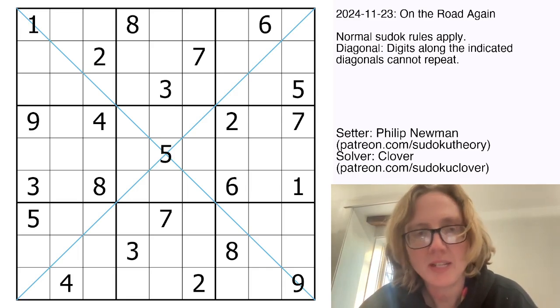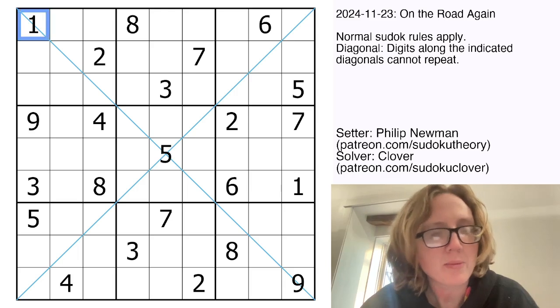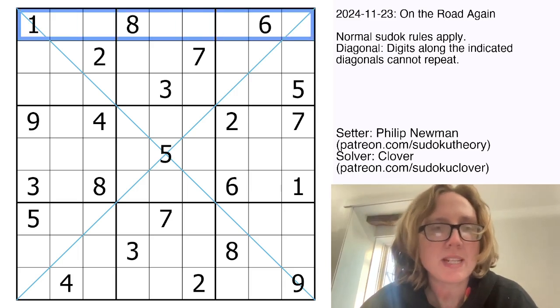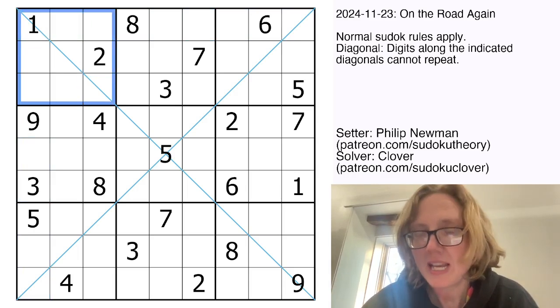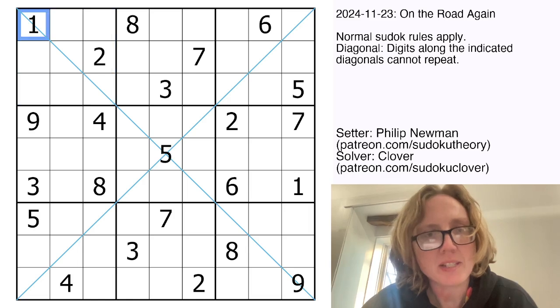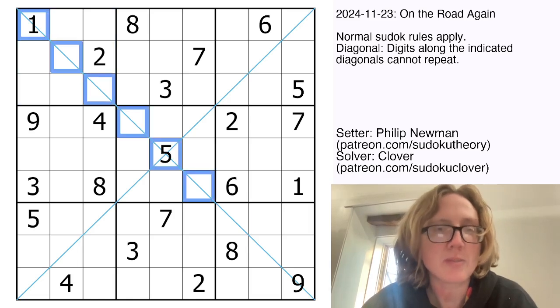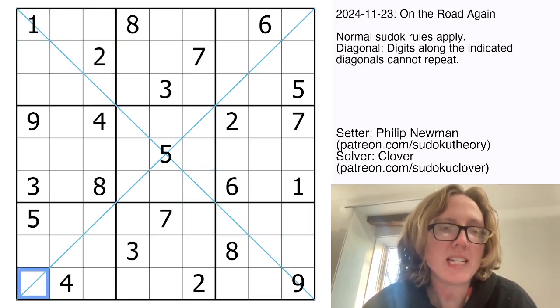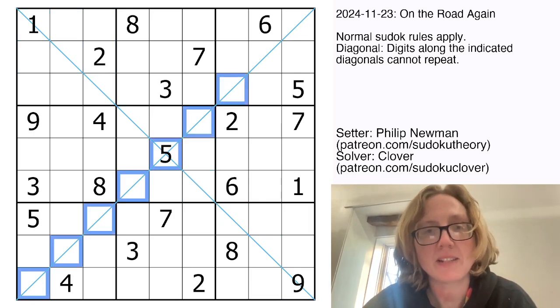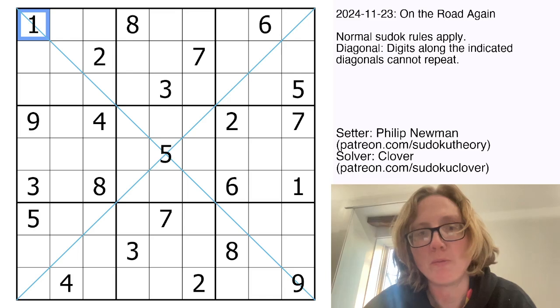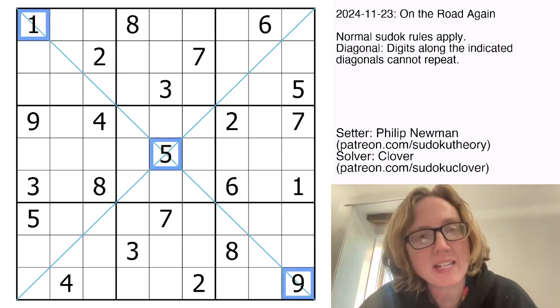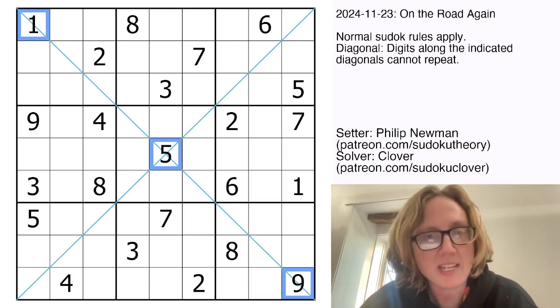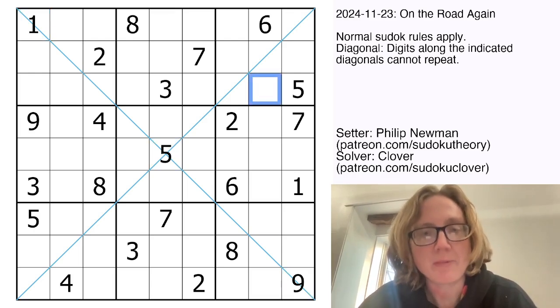So this is a diagonal Sudoku. We have normal Sudoku rules, so we're placing the digits 1 through 9 once each in each row, each column, and each heavily outlined 3x3 region. And in addition to that, because it is diagonal Sudoku, we're placing the digits 1 through 9 exactly once in each of these two marked blue diagonals. So for instance, we already have a 1, a 5, and a 9 in this diagonal, so we can't place any other 1s, 5s, or 9s anywhere along that diagonal.